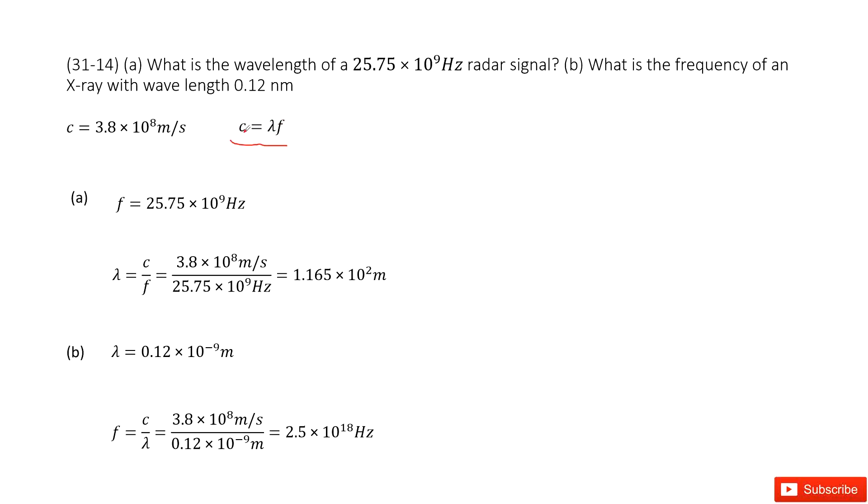Now the speed of the wave is a constant. This is a fundamental formula. From this equation, in part A the frequency is given and we need to find lambda. So from this equation, we get the formula for lambda as c over f.